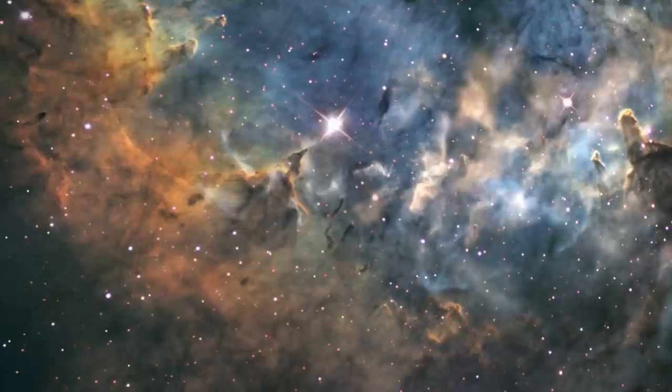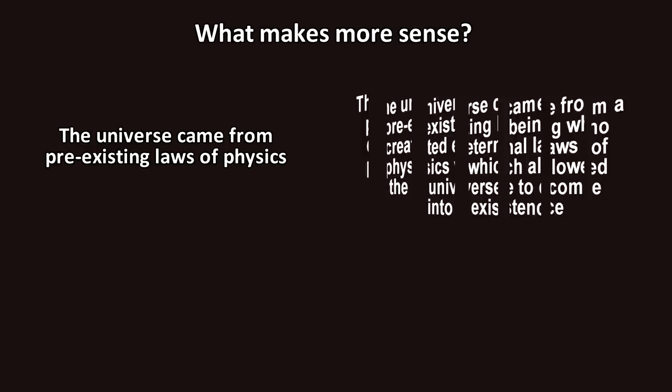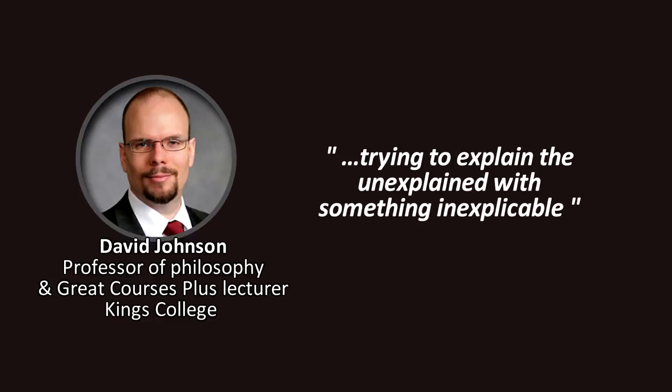But the problem with this argument is that you are replacing something like the laws of physics that may be eternal with something else that is also eternal but more complicated. God is more complicated because he is infinitely complex and does not have to obey the laws of physics. Does it make more sense to say the universe came into being because of a set of pre-existing laws? Or the universe came into being because a pre-existing entity created eternal laws which allowed the universe to come into existence? According to Professor David Johnson of King's College, it will be like trying to explain the currently unexplained with something that is inexplicable. God may or may not exist. I don't claim to know the answer. He may be found at some point, and some principle or theory of nature may prove it. But he probably would not emerge from the constants of the universe.